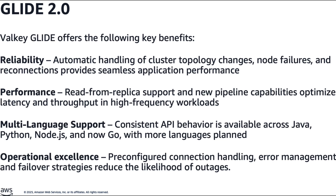The third enhancement was the streamlining of high-throughput workloads with batching. Valky Glide 2.0 introduces command batching to enhance performance for high-throughput workloads. Unlike the previous system where each command required its own request-response cycle, the new batching feature allows multiple commands to be sent and processed in a single request. This significantly reduces network overhead and latency, making it ideal for intensive operations like bulk ingestion, large-scale caching, and real-time analytics.